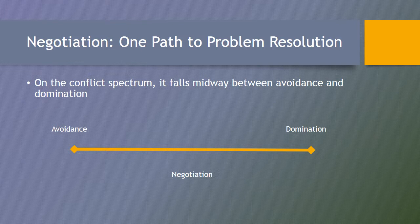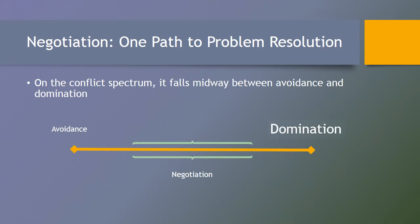Negotiation is one path to problem resolution. On the conflict spectrum, it falls midway between avoidance and domination. In order to find and stay in this sweet spot, we need to change our defensive posturing and create a climate where mutual problem solving can occur and resolution is invited. Domination doesn't work because cooperation is key. Neither party can force their own resolution on the other, as that'll just create defensiveness and prevent mutual cooperation. Both parties must believe a successful resolution is possible and must have hope that the conflict can be resolved, otherwise cooperation will not happen.